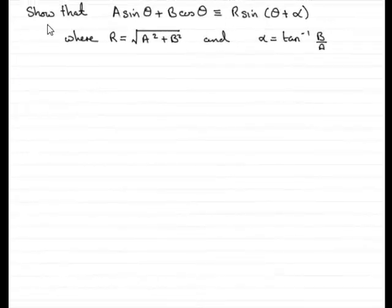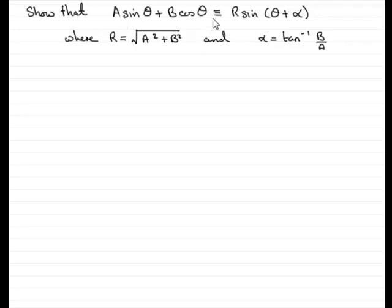Welcome to this tutorial on showing you how a sin θ + b cos θ, where a and b are constants, is identical to r sin(θ + α), where r is the constant that equals the square root of a squared plus b squared, and α is also a constant equal to the inverse tan of b over a.